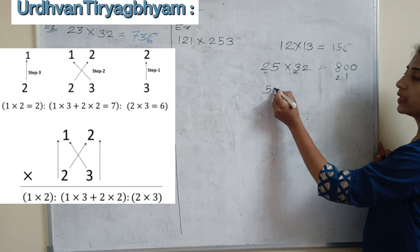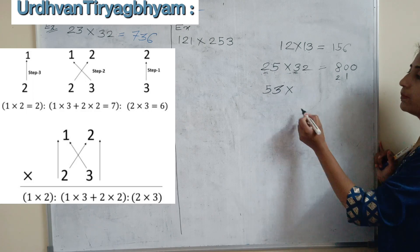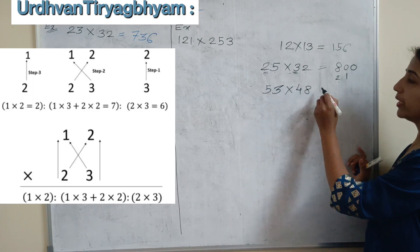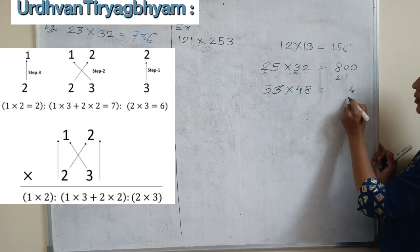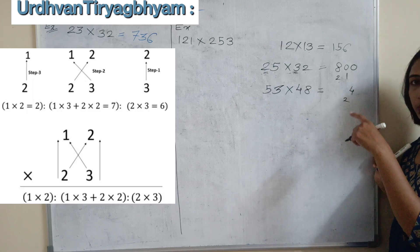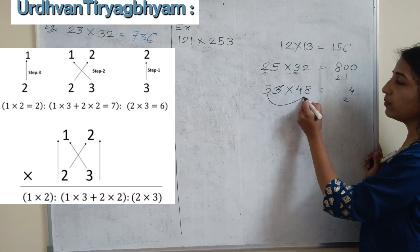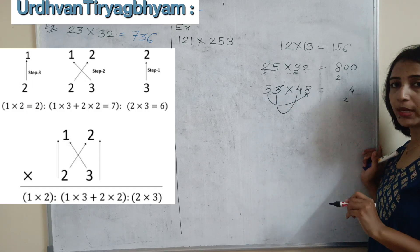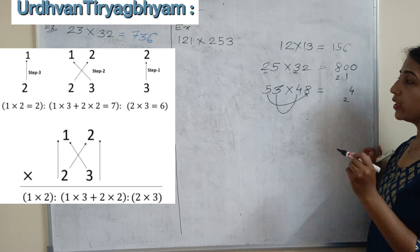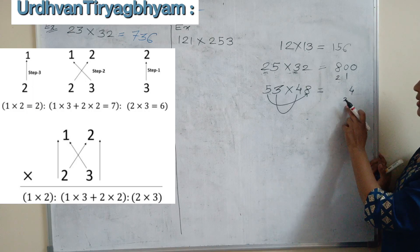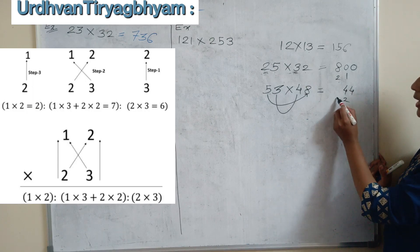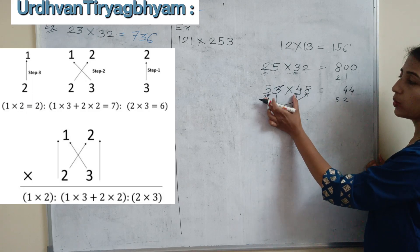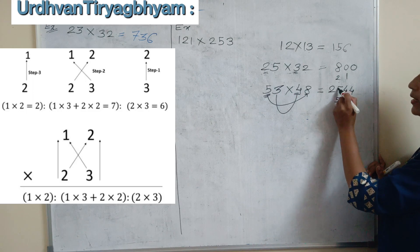Let's take the product of 53 multiplied by 48. Unit place product: 3 into 8 is 24 — write 4, carry 2. Cross product: 5 into 8 plus 4 into 3 is 40 plus 12 equals 52, plus carry 2 gives 54 — write 4, carry 5. Last vertical: 5 into 4 is 20, plus carry 5 gives 25. So the answer is 2544.